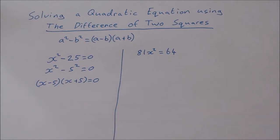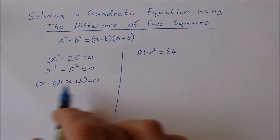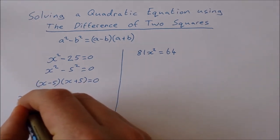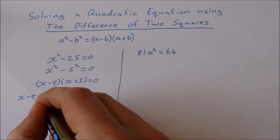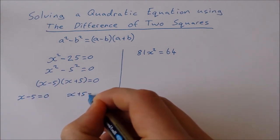Now when I factorize a quadratic equation and I get two factors and they're both equal to 0, then I have to let each one individually equal 0. So I get x minus 5 equals 0, and I get x plus 5 equals 0.